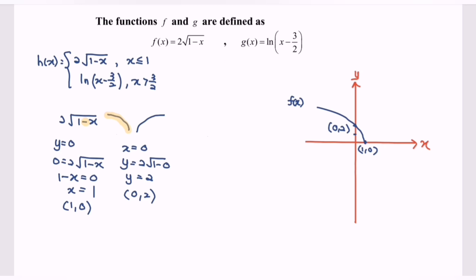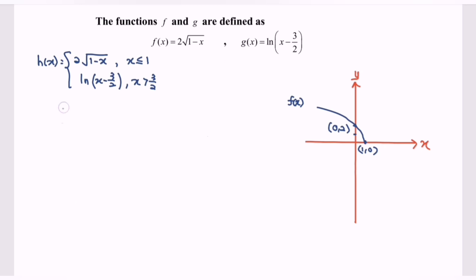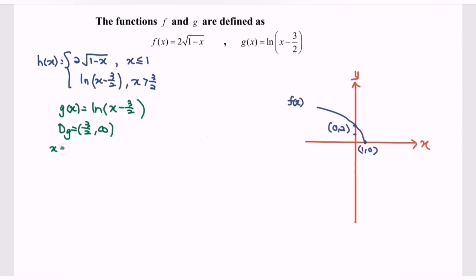Next, focus on g(x), which is equal to ln of bracket x minus 3 over 2. Step 1 is to find the domain: the domain for g is from 3 over 2 to infinity, where 3 over 2 is not included. So we have a vertical asymptote at x equals 3 over 2. For the y-intercept, when x equals 0, since 0 is not in the domain, y is undefined.